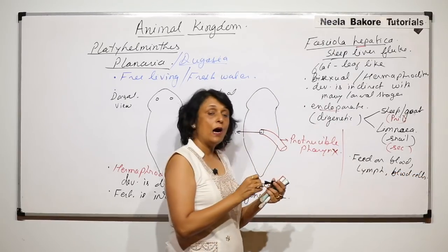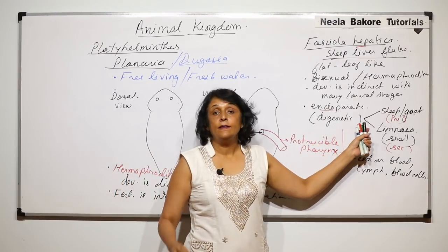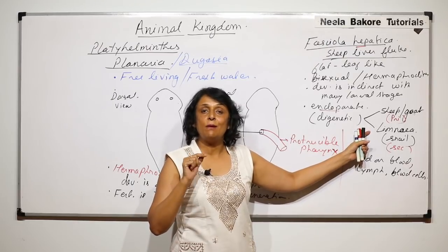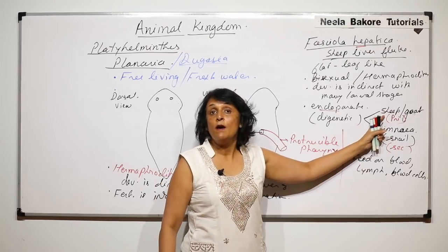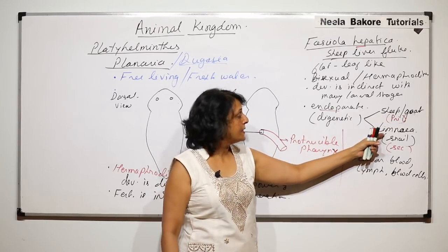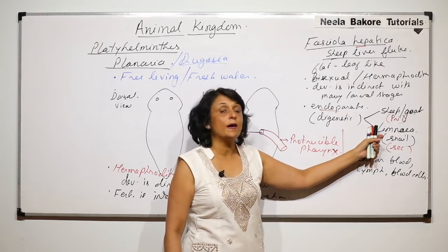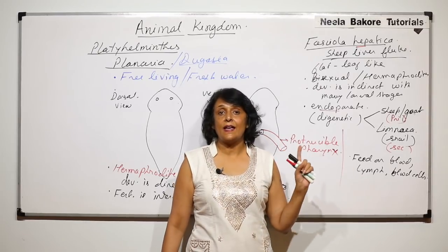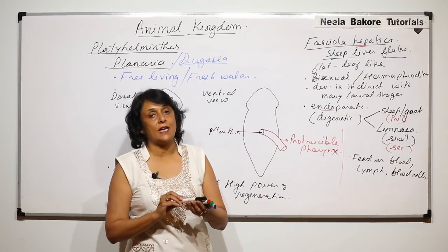The life cycle is completed through sheep and snail. A part of the life cycle is completed in sheep, where sexual reproduction of Fasciola takes place. The other stages, like spore formation, are completed in the snail's body. Because it is an endoparasite, sense organs are not present.